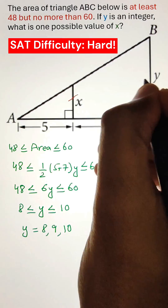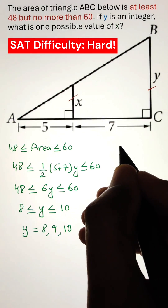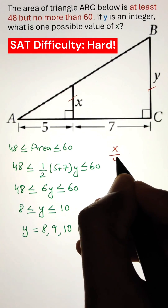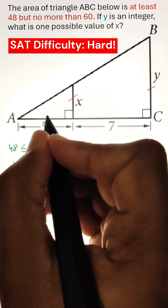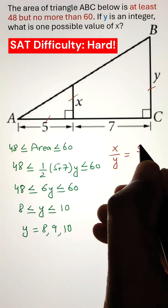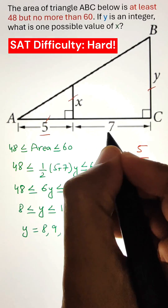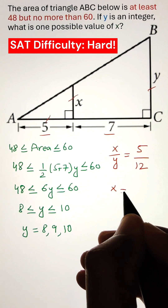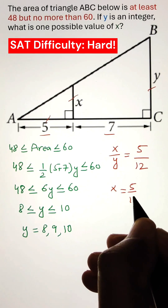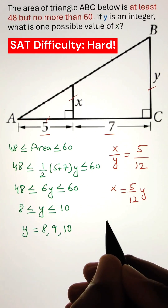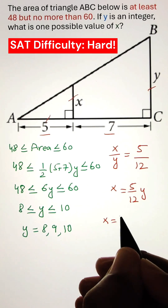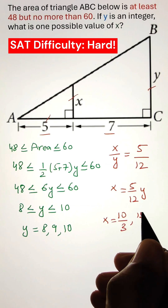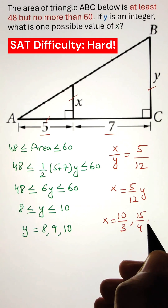Next, using the ratio of sides of similar triangles, we can calculate the relationship between X and Y. Finally, plugging in the values of Y, we can figure out the possible values of X.